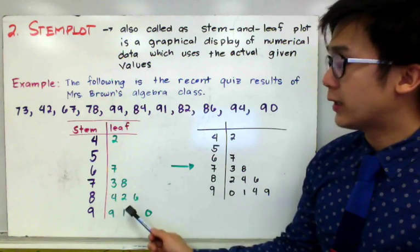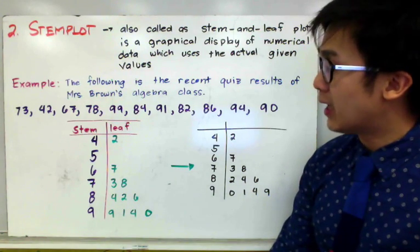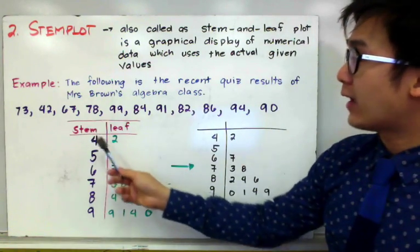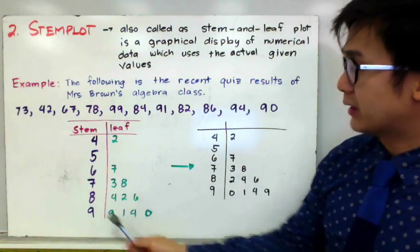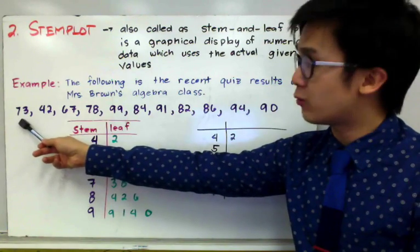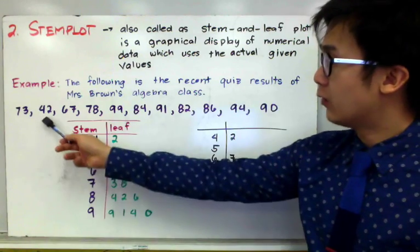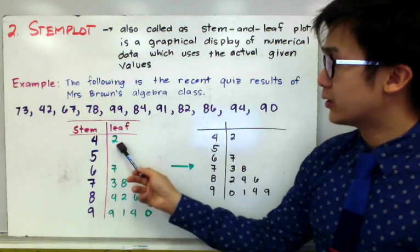For our leaf, all we need to do is, just like constructing a dot plot, we're going to take the next digit and represent it as their leaf. So let's say I have 73, I'll go to 7 and then put 3 right here as my leaf, 42, 4 and then 2.